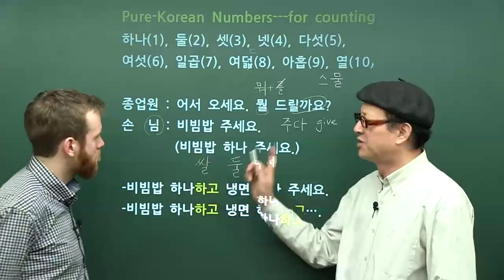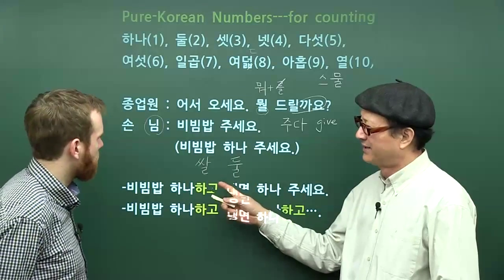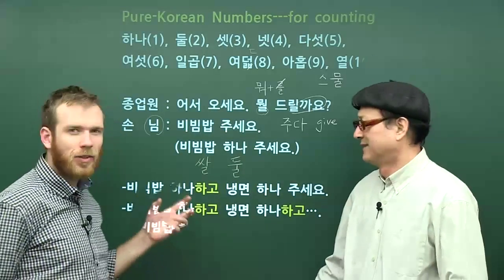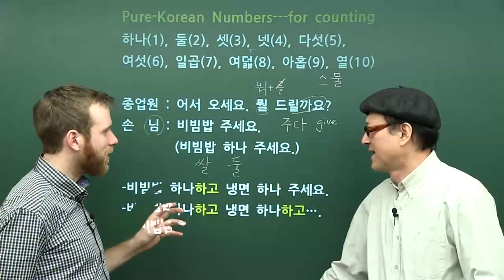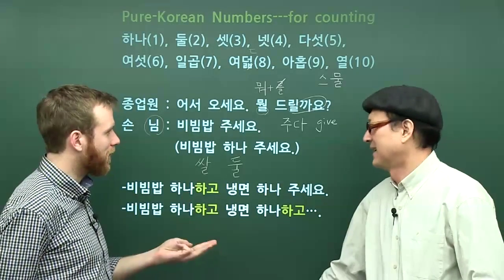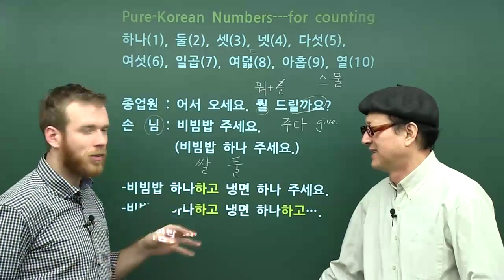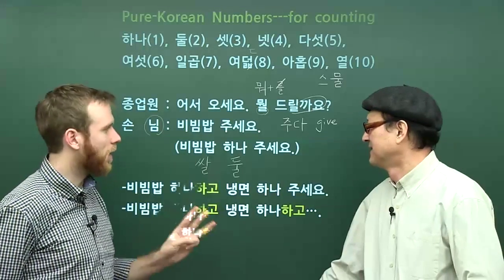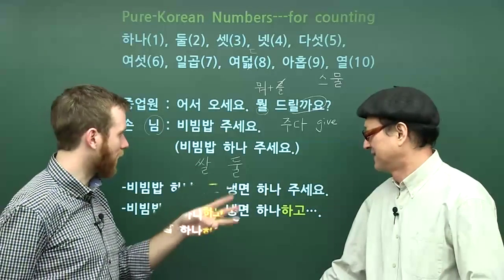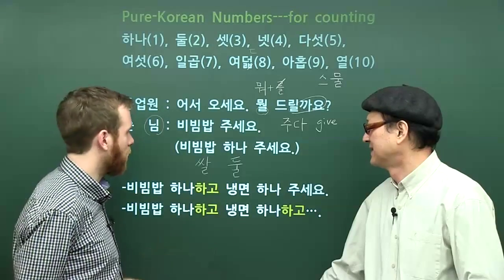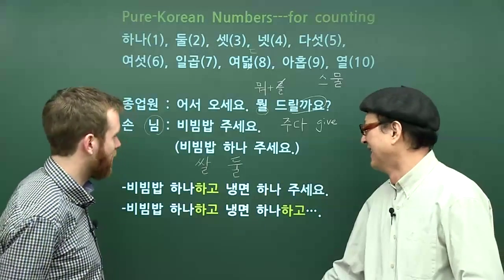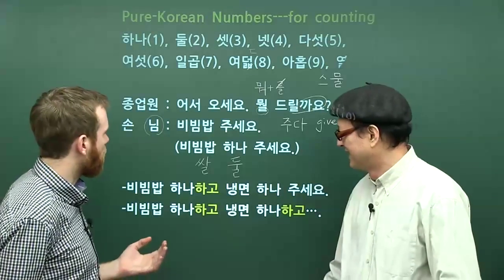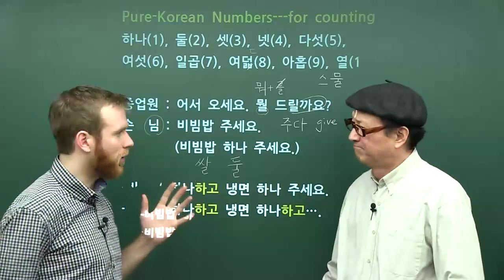The order is important here. In English we say 'three bibimbaps please,' but in Korean we say 비빔밥, three, please — 비빔밥 셋 주세요. And 하나 주세요, or 열 주세요 if I'm very hungry and want to eat ten. Again, the word order is very important.